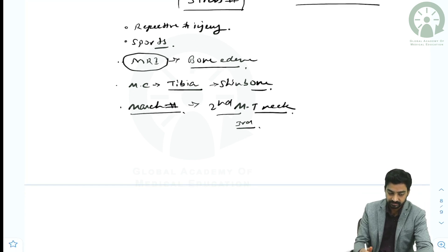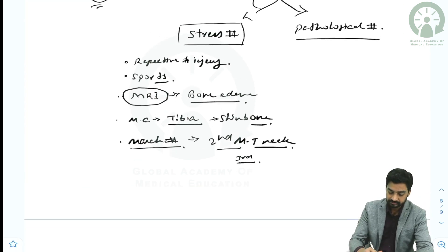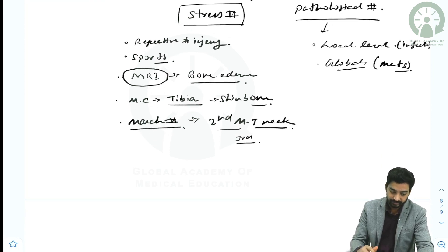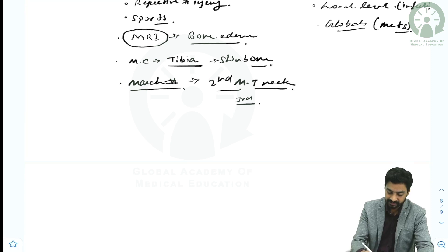Coming to the pathological fracture - the pathology can be at a local level or global. Local means it can be due to infection, or globally it can be due to metastasis. For the pathological part, one classification is known for that, which is Mirels.